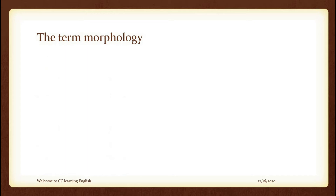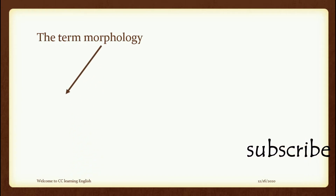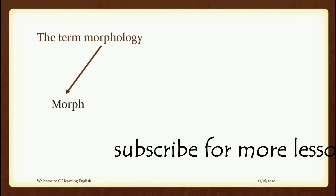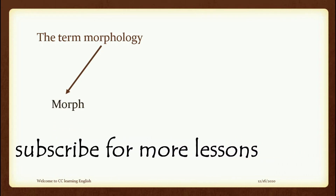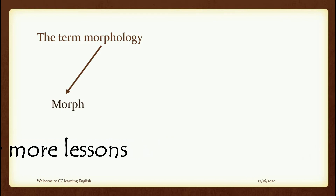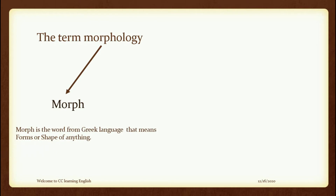So, the terms of morphology — what is a 'term'? A term means the words or lexis of morphology. The term of morphology is divided into two parts. The first is 'morph.' Morph comes from the Greek language, meaning 'form' or 'shape' of anything — a physical thing, something we can see or touch.